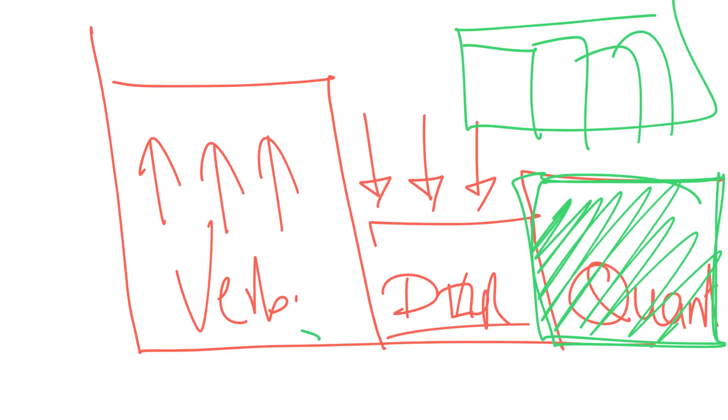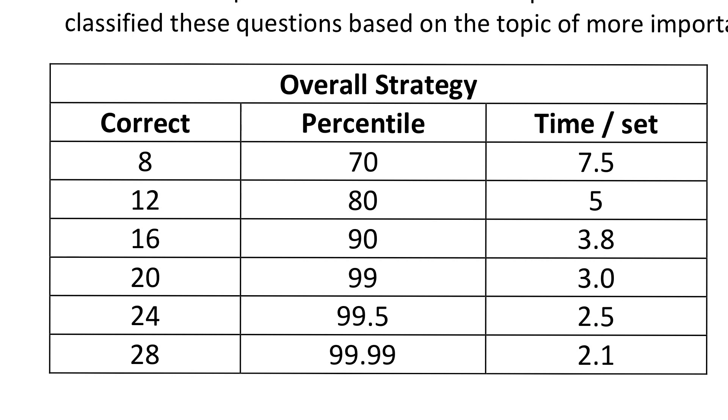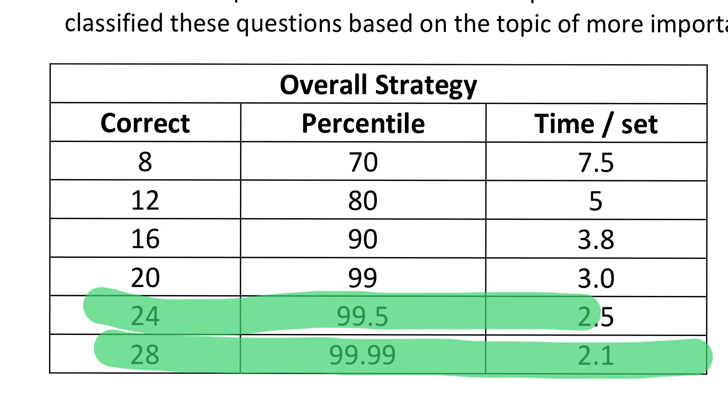At number 1, the most important thing is overall strategy - how many questions will I attempt, how much time to spend per question. If I do 28 correct answers, correct by the way not attempt, you will get 90.99%. So topper will be attempting or making 28 questions right out of 34 to get rank 1. Time per question is 2.1 minutes. If I do 24 questions right, it's 99.5 percentile.